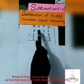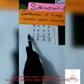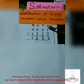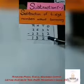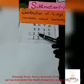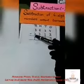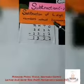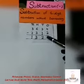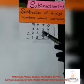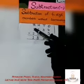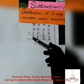The numbers are 3634 minus 2312. We subtract ones digit from ones digit, tens digit from tens digit, hundreds digit from hundreds digit, and thousands digit from thousands digit. Starting from the ones: 4 minus 2 is equal to 2, 3 minus 1 is equal to 2, 6 minus 3 is equal to 3.